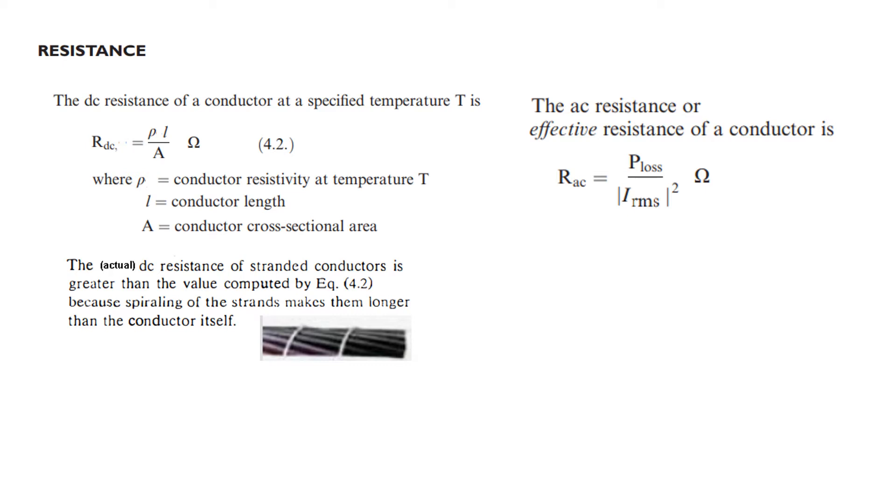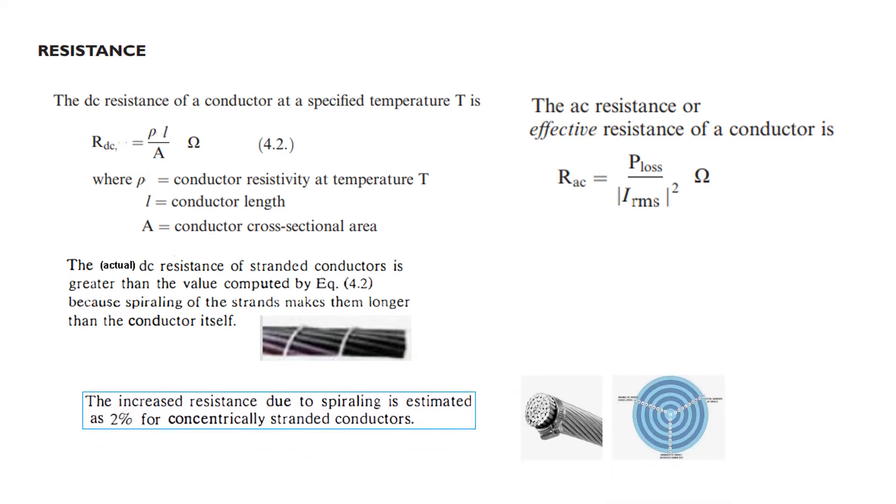There is a simple technique to cater for that, and that is we add 2 percent. The increased resistance due to spiraling is estimated as 2 percent for a concentrically stranded conductor, conductors which are stranded around the center, like this and as shown here.